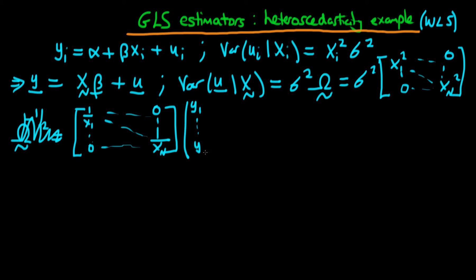And then we apply it to the right-hand side as well. So then we're just going to get our 1 over x1 through to 1 over xn times our matrix of our independent variables, which in the case of a bivariate model is just going to be 1 x1 through to 1 xn.